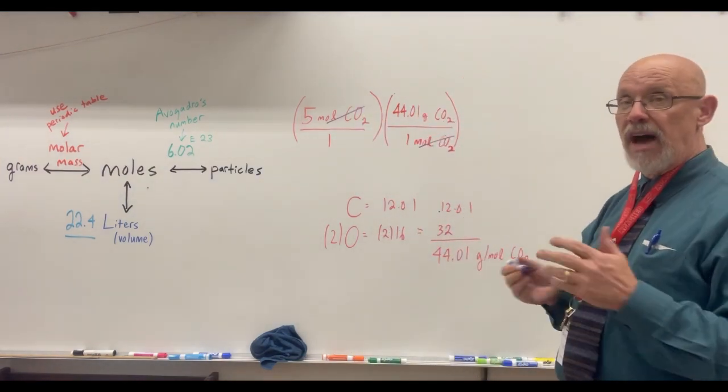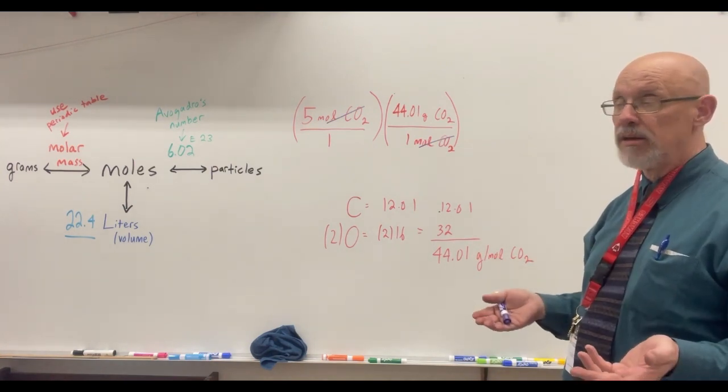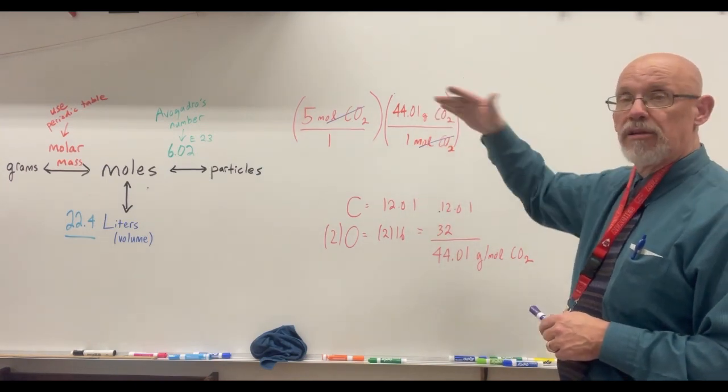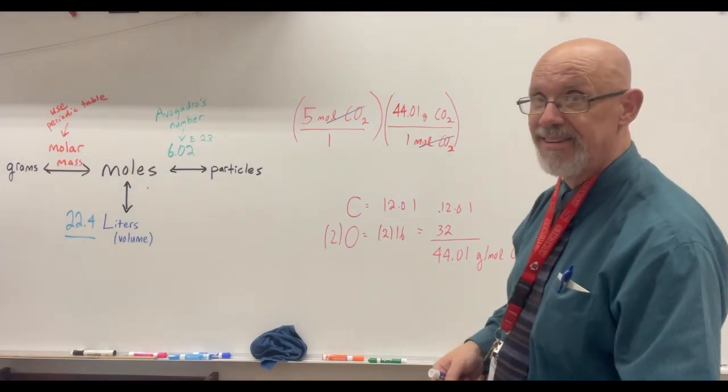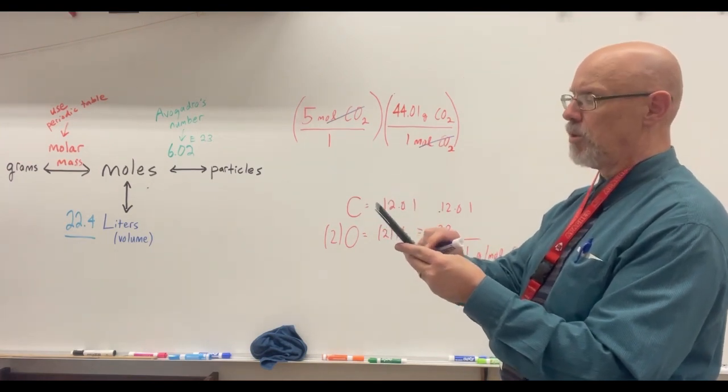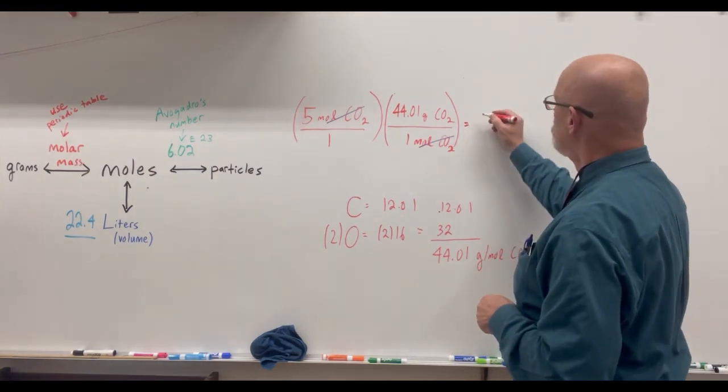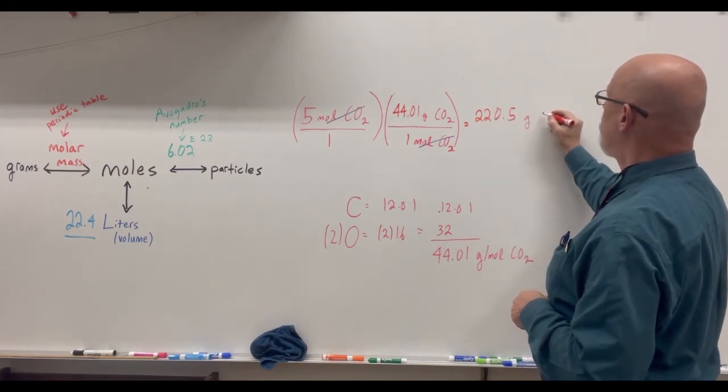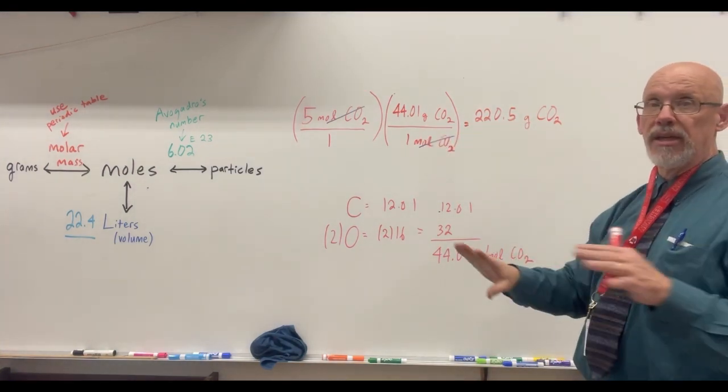And it should be clear at this moment that we can cancel the moles of CO2. And this time instead of dividing like we did when we went from grams to moles, everything in the bottom is one. So the way we solve this is that we just multiply across the top. And we end up with this answer. 220.5 grams of CO2. It's grams of CO2 because that's the unit substance that didn't get canceled.